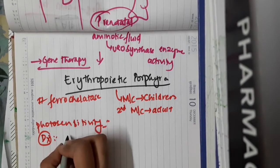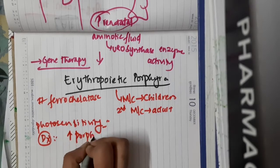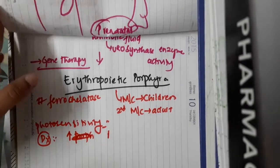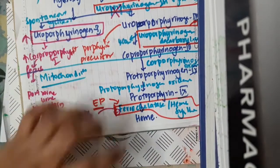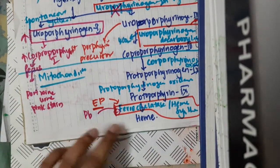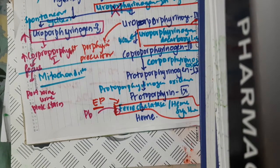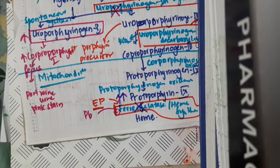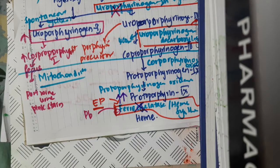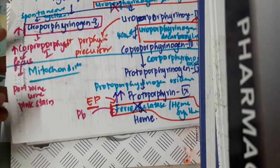For diagnosis, you will look for increased amounts of porphyrin. Erythropoietic protoporphyria occurs due to the defect in ferrochelatase, also known as heme synthase. As a result, protoporphyrin-9 cannot be converted to heme, so protoporphyrin-9 levels are increased. Diagnosis of erythropoietic protoporphyria is done by detecting these increased protoporphyrin levels.